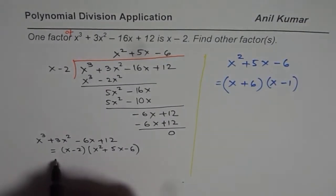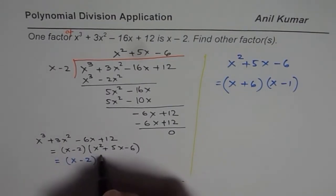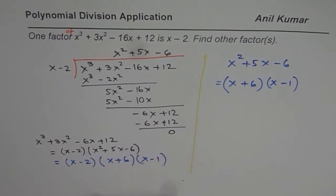Now, including this factor here, we get our final answer, which is x - 2 times x + 6 times x - 1.